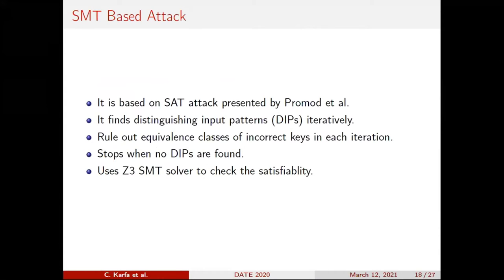That obfuscated C code is our input for the attack. Once we have it, we formulate an SMT-based attack using the Z3 SMT solver. We model the C code as symbolic formulas, and every iteration we ask: is there a DIP — a distinguishing input pattern? We keep asking the solver to give a DIP, and once no DIP is found, the solver replies UNSAT and we get the key. Our tool is limited to loops where the bound is known statically.